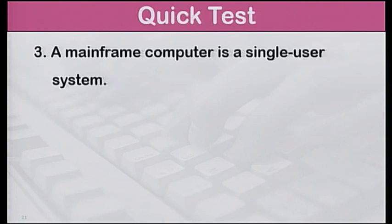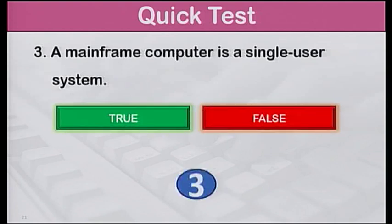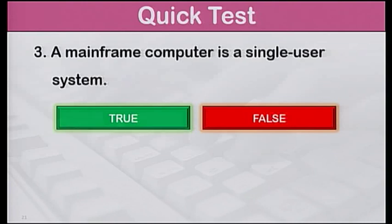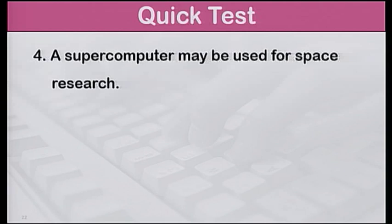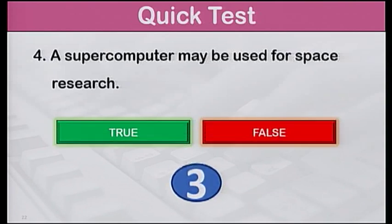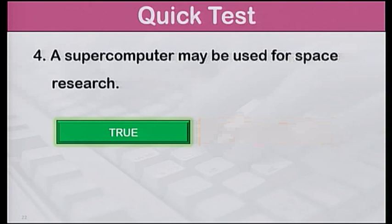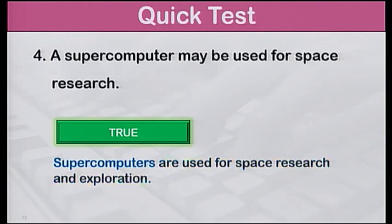Number 3: A microcomputer can handle hundreds of users at the same time and is therefore a multi-user system. True or false? Number 4: A supercomputer may be used for space research. True or false? The answer is true. Supercomputers are used for space research and exploration.